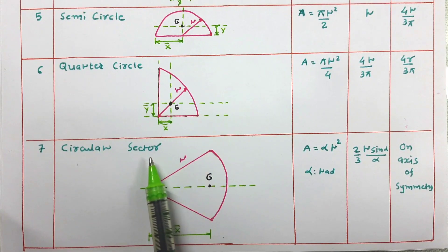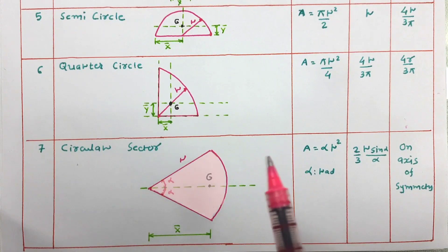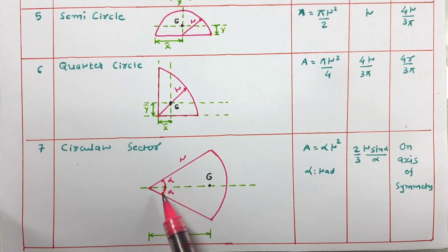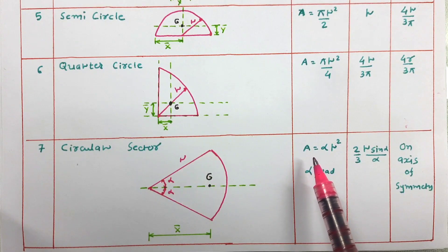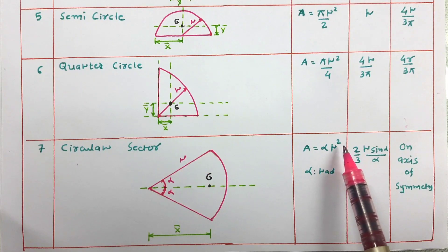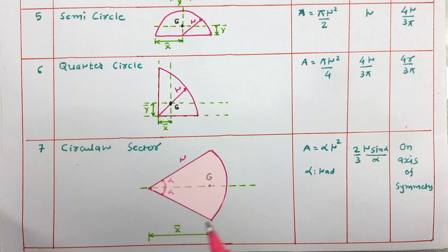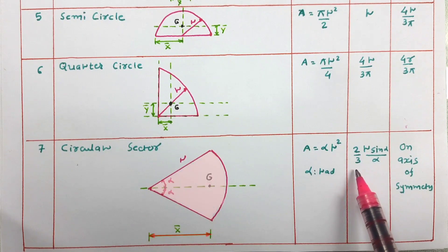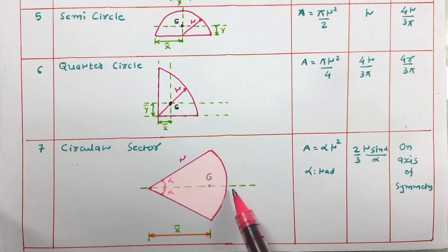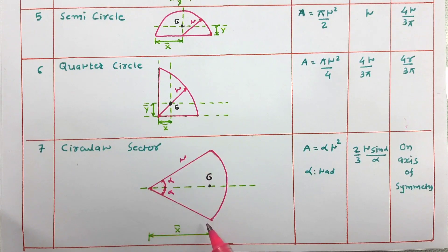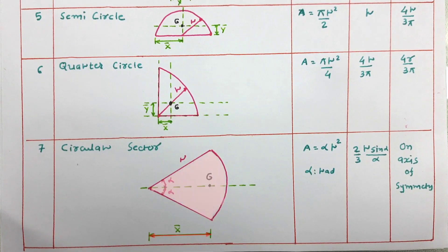The last shape is the circular sector, which subtends an angle alpha at the center. The area of a circular sector equals alpha r squared, where alpha is the angle in radians. The centroidal distance x-bar from the center equals two-thirds of r times sin(alpha) divided by alpha. The y-bar lies on the axis of symmetry at half the total extent of the sector in the y-direction.